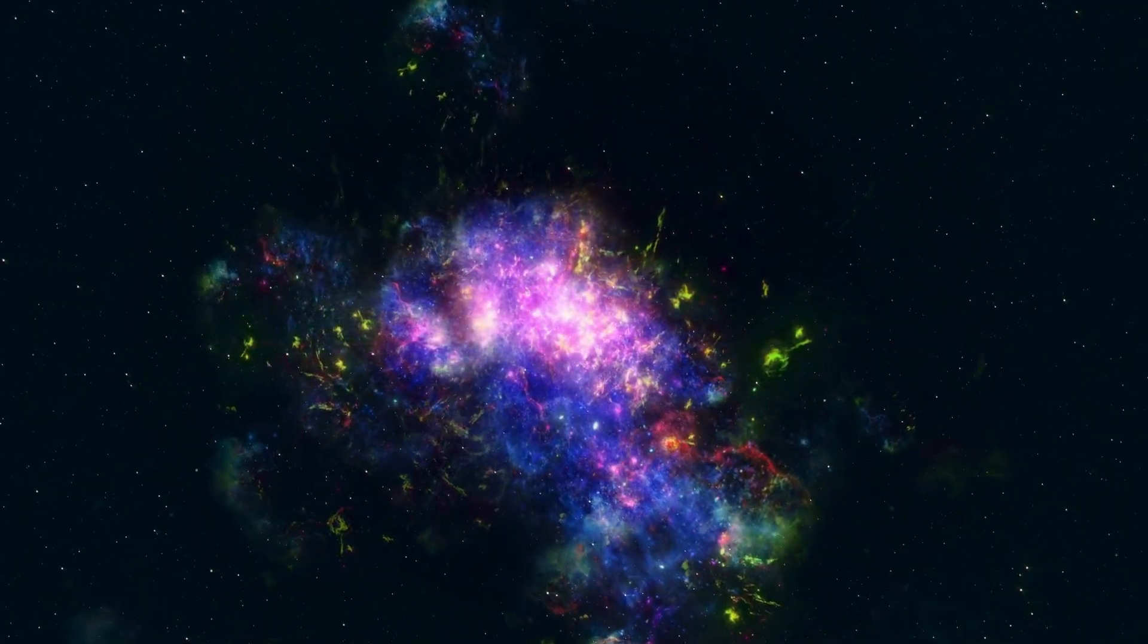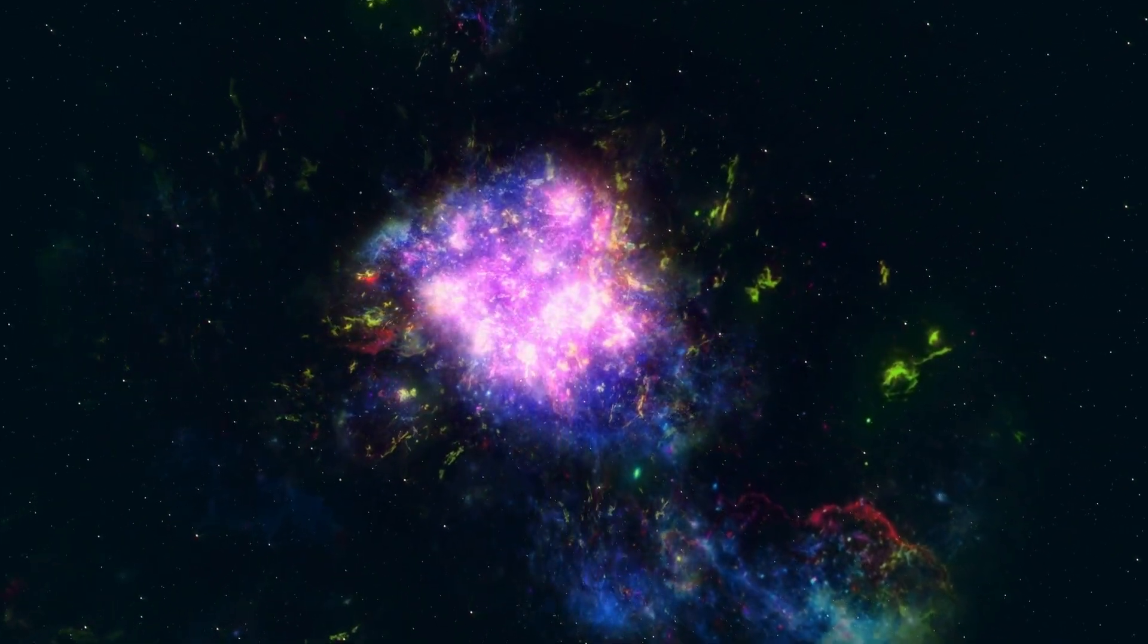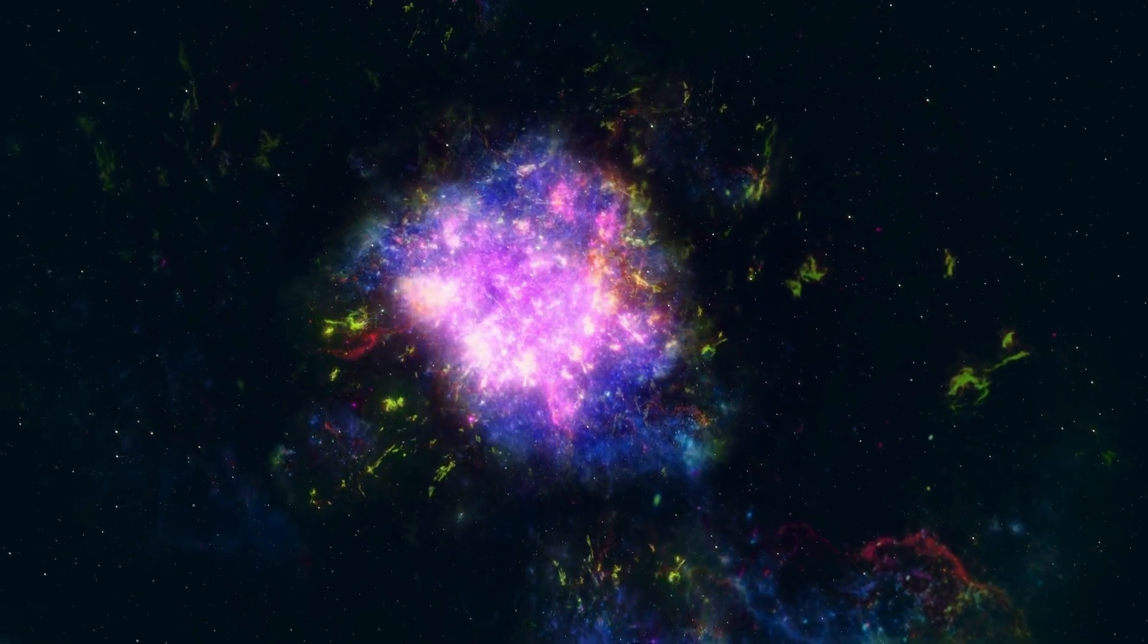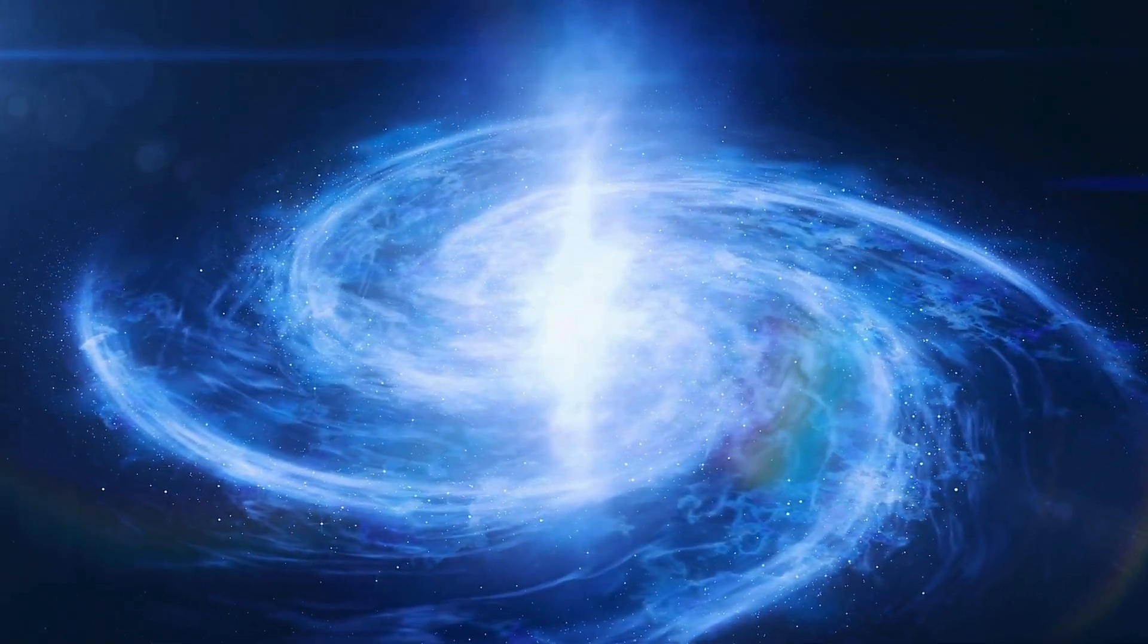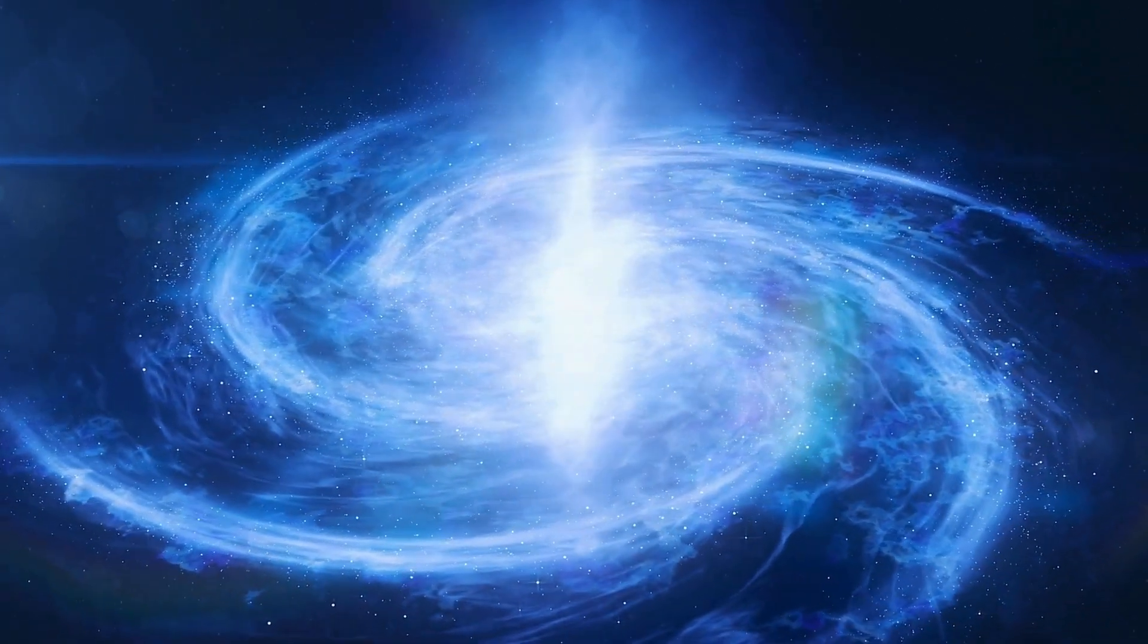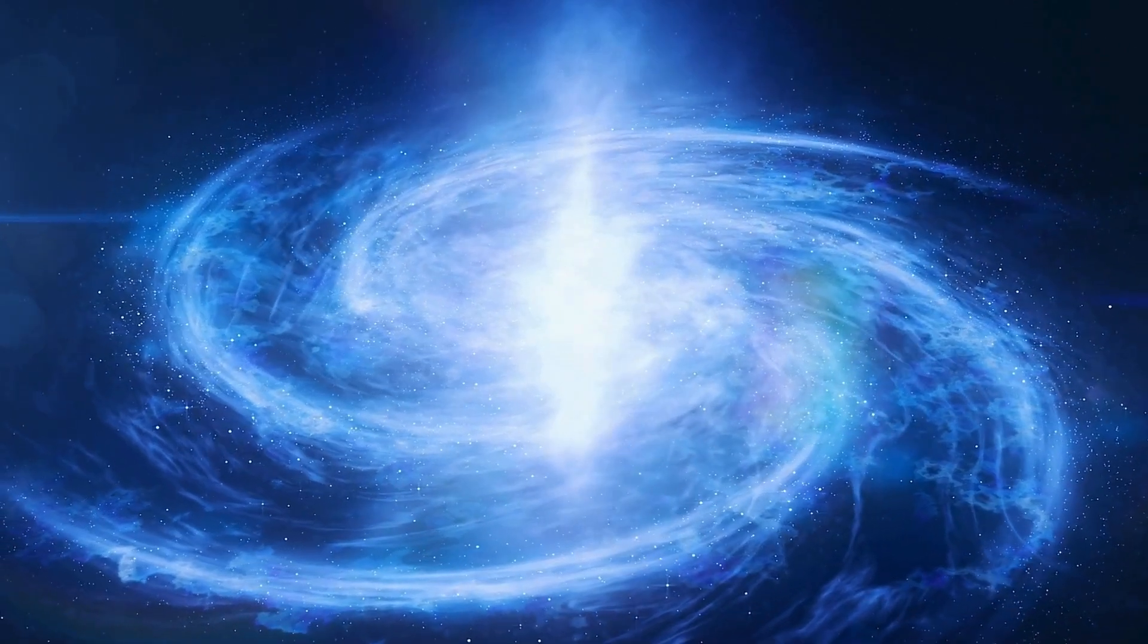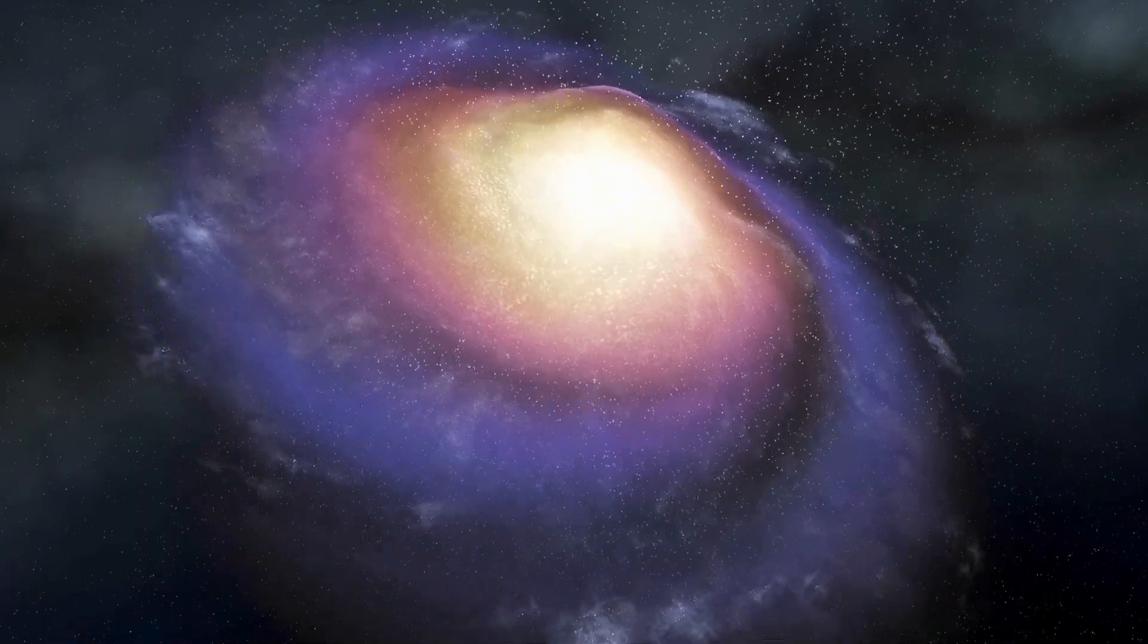In the case of Betelgeuse, as the hydrogen depletes, it begins to burn helium, leading to the formation of carbon and oxygen. This transition from the main sequence phase to the helium burning phase is marked by the star's expansion into a red giant. With time, as helium reserves diminish, the star undergoes further expansion and shifts into other burning phases, each characterized by the fusion of progressively heavier elements.